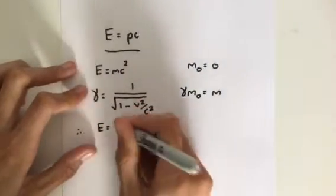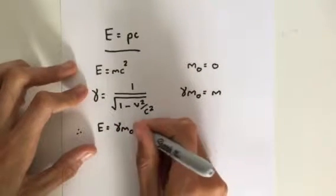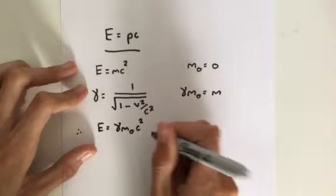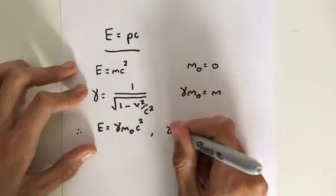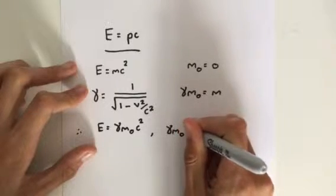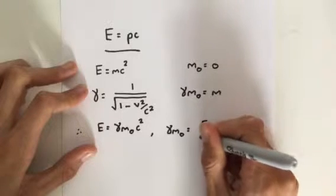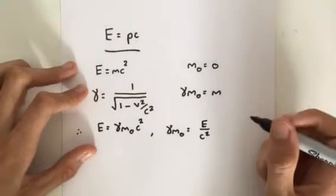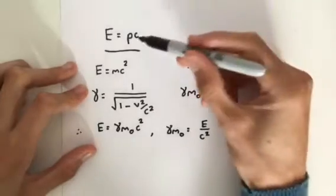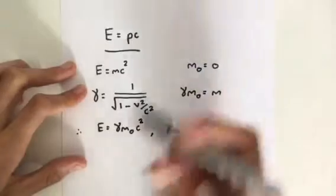We can write this in a different way. We can say gamma M0 is equal to E divided by C squared. Well, we're proving this. So where's the momentum? So let's take the momentum.